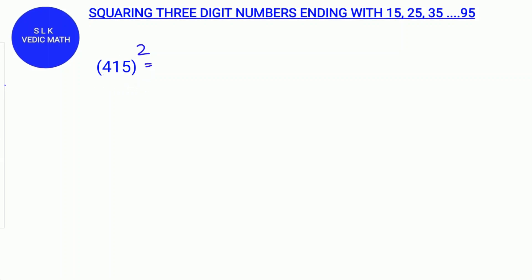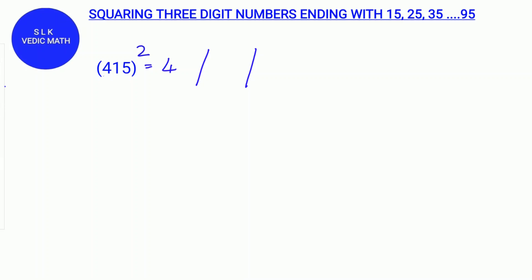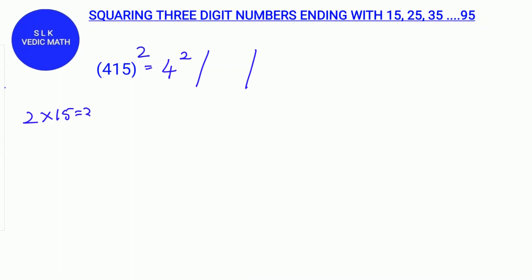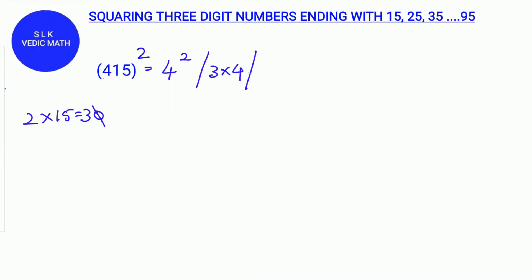415 square. First, put a slash to separate it into 3 parts. We do the first digit square — so 4 square. 415 ends with 15, so we multiply 2 into 15 which is 30. We drop the 0 and take the 3, and we multiply this 3 with the first digit 4. So it's 3 into 4. Next, we do 15 square because 415 ends with 15.